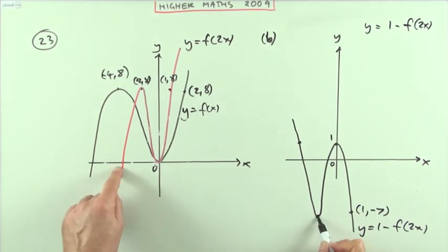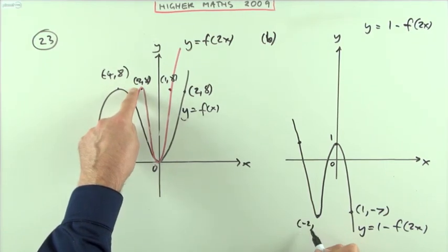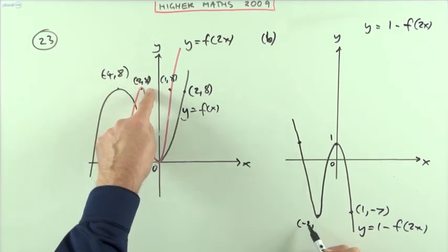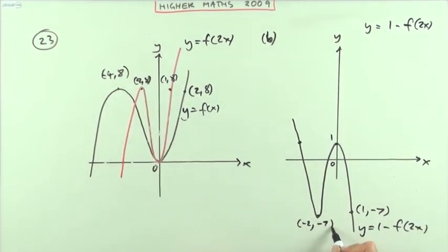This point which was, sorry up here, negative 2, 8 will still be at negative 2 but it'll no longer be at 8. The new y coordinate will be 1 minus the 8 so it'll be negative 2, negative 7.